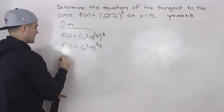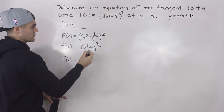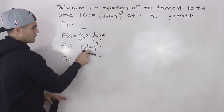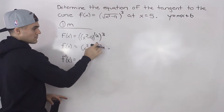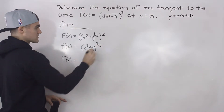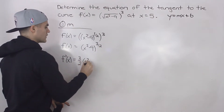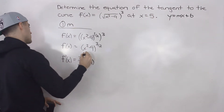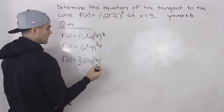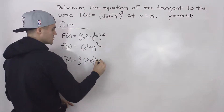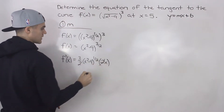Now we can find the derivative. Notice we have to apply the chain rule — we have x squared minus 9 inside another function raised to the power of 3 over 2. We take the derivative of the outside function: bring the 3 over 2 down, the inside stays the same, and 3 over 2 minus 1 gives us 1 over 2. Then we multiply by the derivative of the inside, which is 2x. The 2s cancel out.